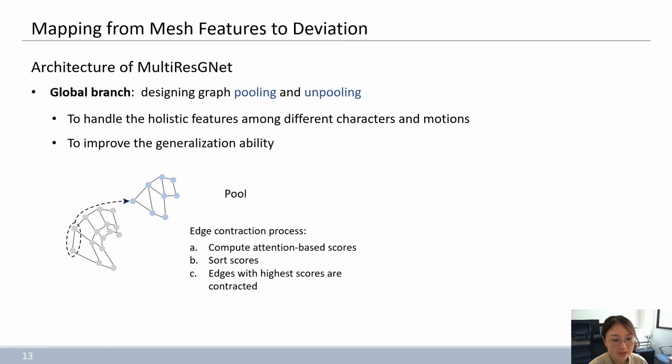Iteratively, we implement edge contraction on the overall mesh. Edges with highest scores are contracted and the nodes that belong to the contracted edges are ignored for other edge contractions. Through this process, the total number of nodes will become n star that roughly equals 50% of the original n.